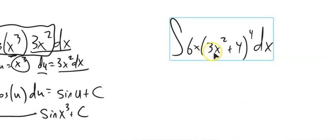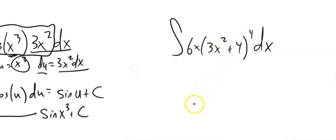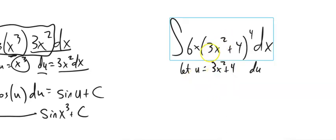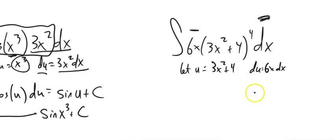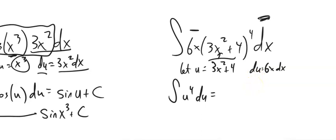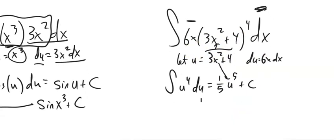Next one: I notice I have (3x² + 4) to the 4th power — 3x² + 4 is inside the 4th power function. So let u = 3x² + 4. The derivative of u is 6x dx. I have that 6x dx, so that's my du. This is my u. So I have the integral of u⁴ du, which gives 1/5 u⁵ + C. Plugging u back in: 1/5(3x² + 4)⁵ + C. That placeholder u was very convenient!